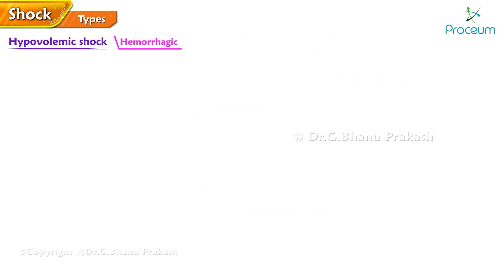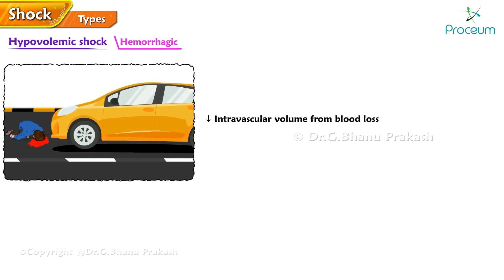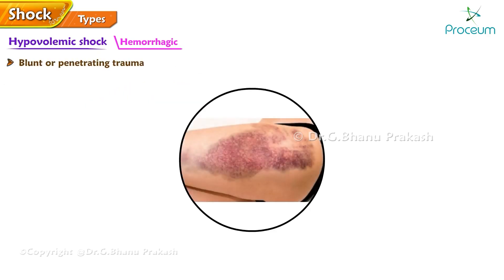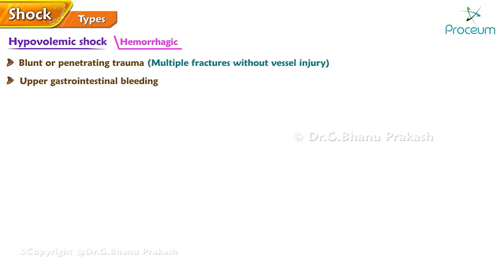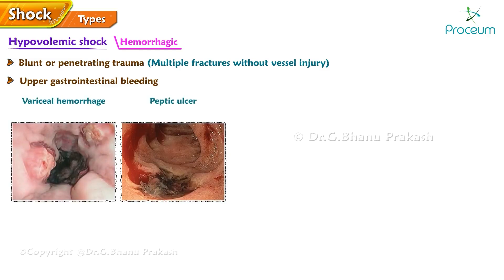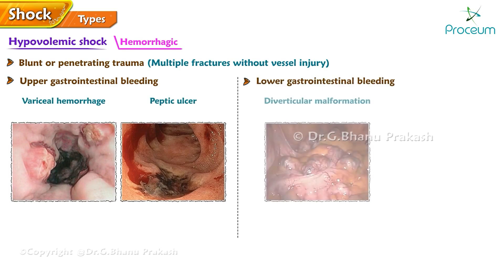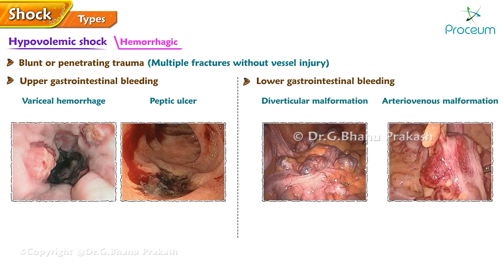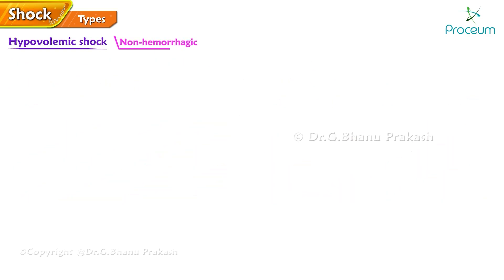Reduced intravascular volume from blood loss can result in hemorrhagic shock. There are multiple causes, of which blunt or penetrating trauma is the most common, followed by upper gastrointestinal hemorrhage such as peptic ulcer, or lower gastrointestinal bleeding such as diverticular arteriovenous malformation.